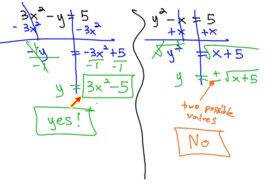To determine if an equation is a function, the quick and easy way we can decide is to solve the equation for y. If there's only one possible value for y, it is a function. If there's more than one, it is not a function.